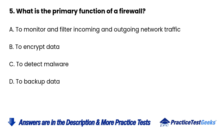Question 5: What is the primary function of a firewall? A. To monitor and filter incoming and outgoing network traffic. B. To encrypt data. C. To detect malware. D. To back up data.